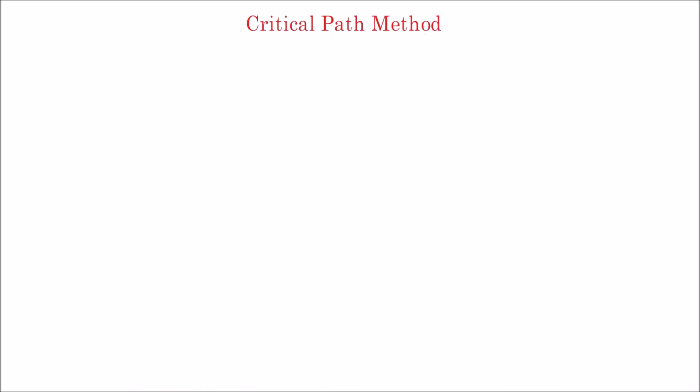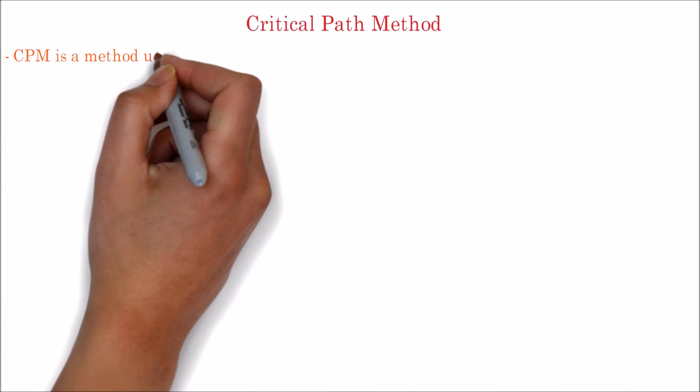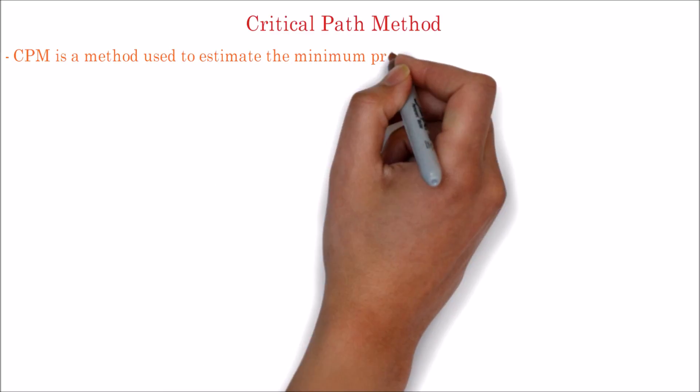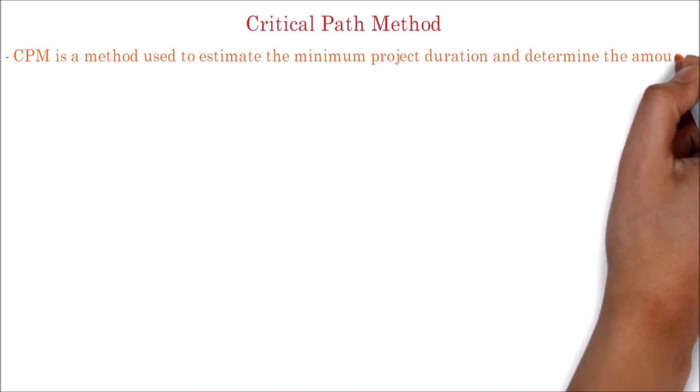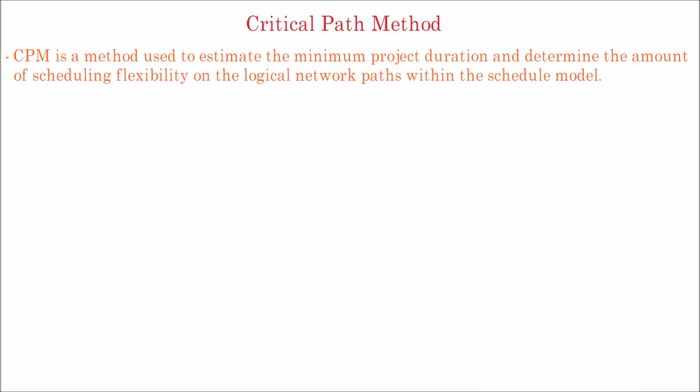Let's look in detail about the critical path method. CPM is a method used to estimate the minimum project duration and determine the amount of scheduling flexibility on the logical network paths within the schedule model.